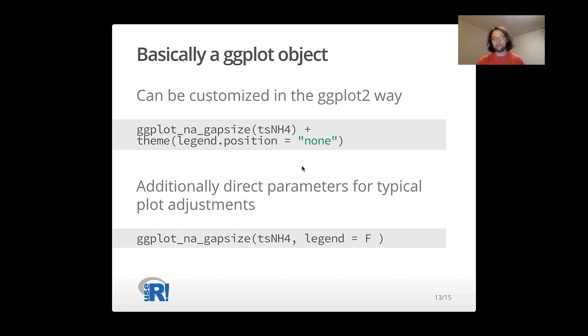But actually, as we know, not everybody is a ggplot2 professional. And we have also made the most important parameters available as quick adjustments. So you can also say legend equals false. And that would also give you the same result. And you can do this for the maybe top five most important arguments which you need for plot adjustments. So it should be also quite easy to use for not ggplot2 pros.